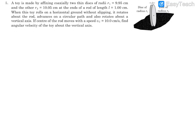Consider equation number 5. There is a toy made by fixing two coaxially thin disks of slightly different radii, and the rod connecting the two is one centimeter, so this L is given. It is moving on horizontal ground without slip, so it's a pure rolling case, moving on a circular path. The velocity of the center of the rod has been given to us. The question asks: what is the angular velocity of this toy about the vertical axis?